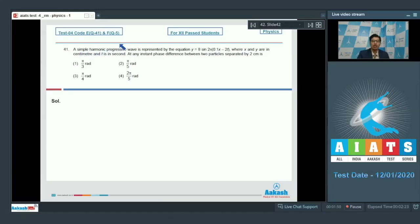The question says a simple harmonic progressive wave is represented by equation y equals 8 sin 2 pi 0.1 x minus 2 t, where x and y are in centimeter and t is in seconds. At any instant, phase difference between two particles separated by 2 centimeter is.